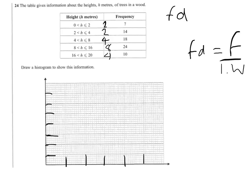So 7 divided by 2 gives me a frequency density of 3.5. 14 divided by 2 gives me a frequency density of 7. 18 over 4 is 4.5. 24 over 8 is 3 and 10 over 4 is 2.5.